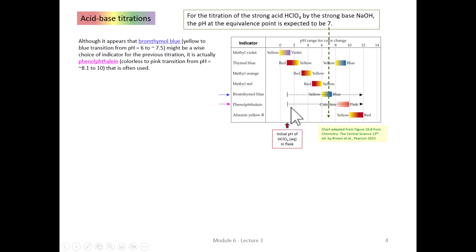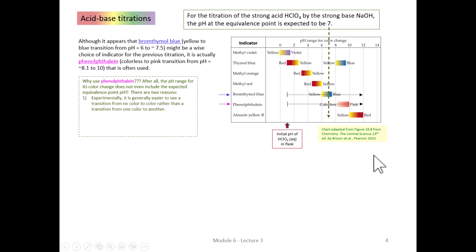Interestingly, phenolphthalein is normally the indicator of choice even though its color transition from colorless to pink isn't exactly at pH 7. There are a couple of reasons: first, it's typically easier to detect a change from no color to color. With bromthymol blue, the yellow-to-blue transition may pass through green, making it harder to judge exactly when the endpoint is reached.